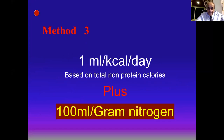A third fluid calculation method: 1 mL per kilocalorie per day based on total non-protein calories, plus 100 mL per gram of nitrogen.